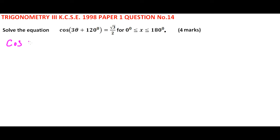cos(3θ + 120°) equals, when you divide by √3/2, you get 0.866. The angle whose cosine is 0.866 is 30 degrees.